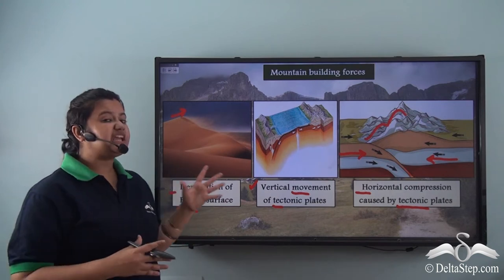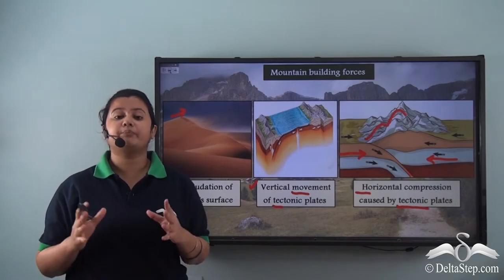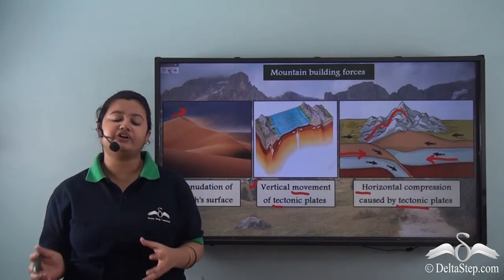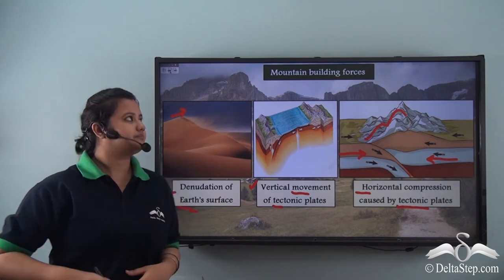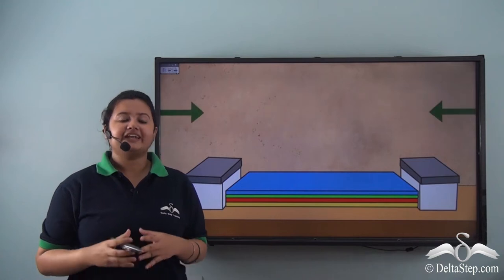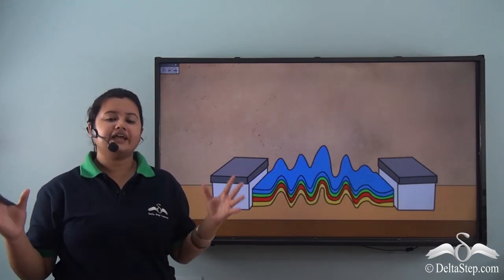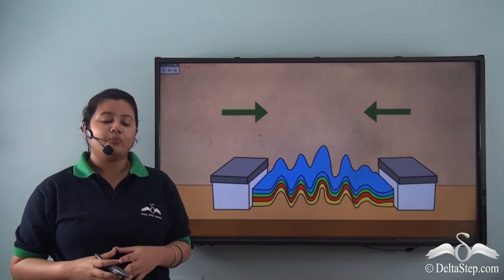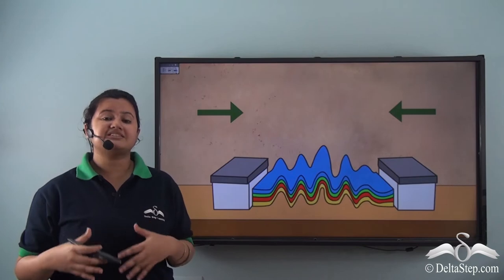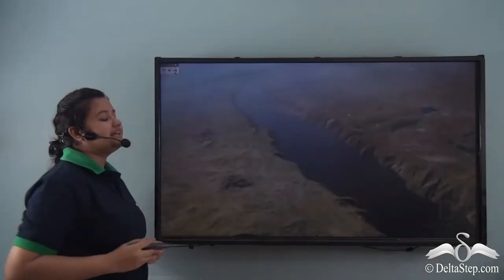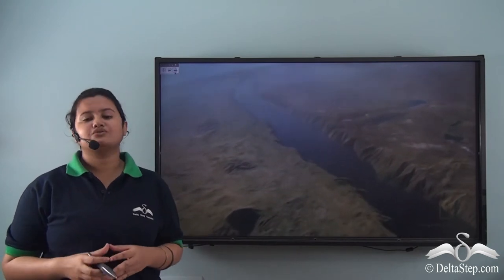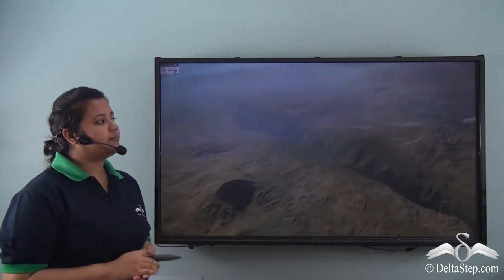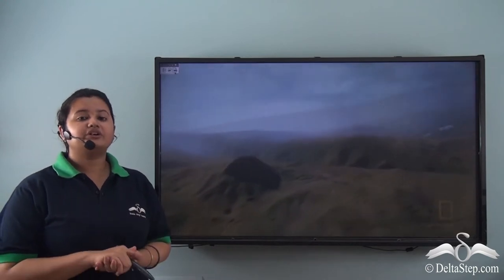Now we will study each of these processes in detail. Depending on the process of formation, mountains can be classified into various types. Let us perform an activity: take some hand towels and lay them on top of one another, then take two shoe boxes and push them toward the center from both ends. The hand towels get folded, just as mountains are formed due to convergence of two tectonic plates.